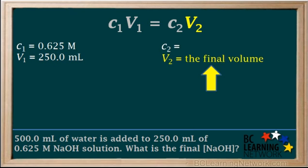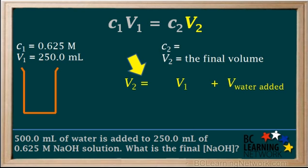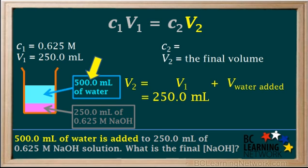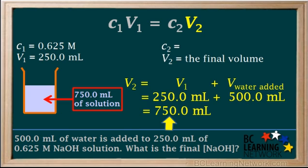In order to find V2, the final volume, we can use the equation V2 is equal to V1 plus the volume of water added. The initial volume of the solution, V1, is 250 mL. The water added was 500 mL. So 250 plus 500 equals 750 mL. The final volume, V2, equals 750 mL.